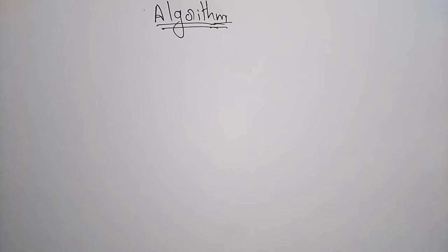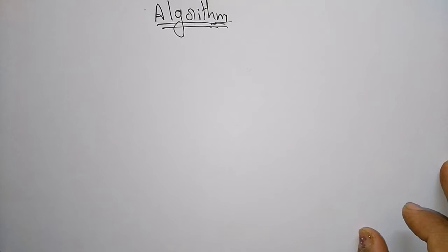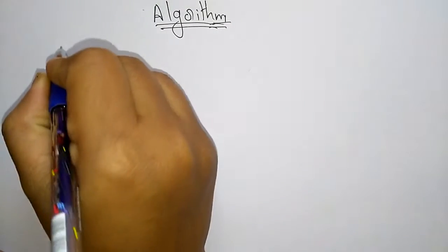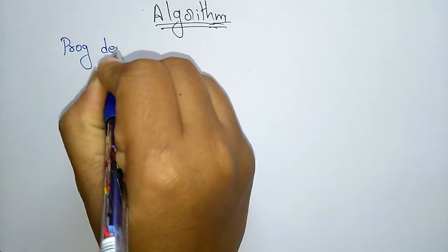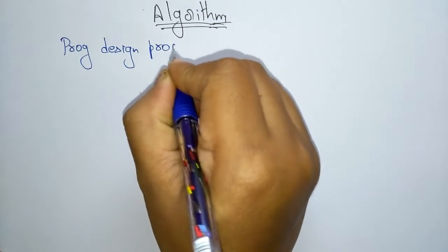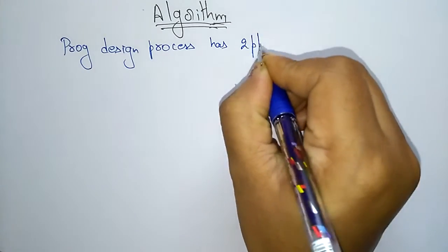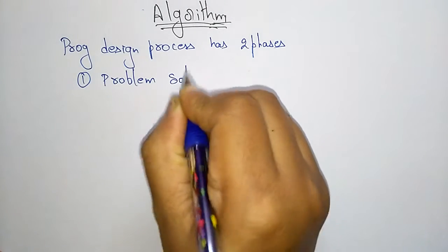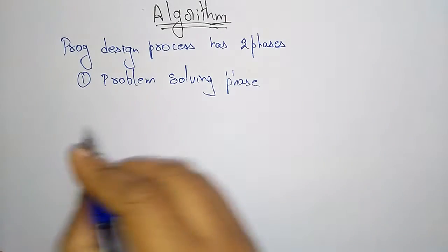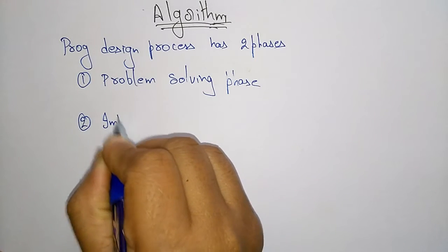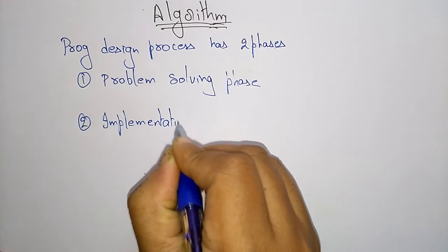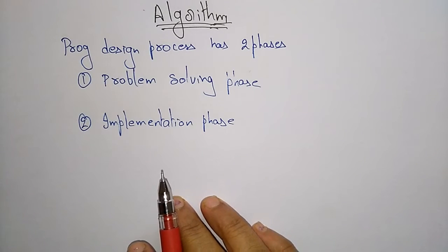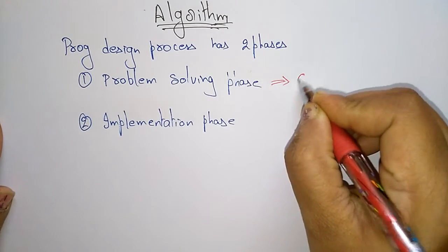Hi students, coming to the next subject, C programming. Let us see what is an algorithm. Any programming design process has two phases. The first one is the problem-solving phase and the next one is the implementation phase. Any program device will follow these two steps: problem-solving phase and implementation phase.